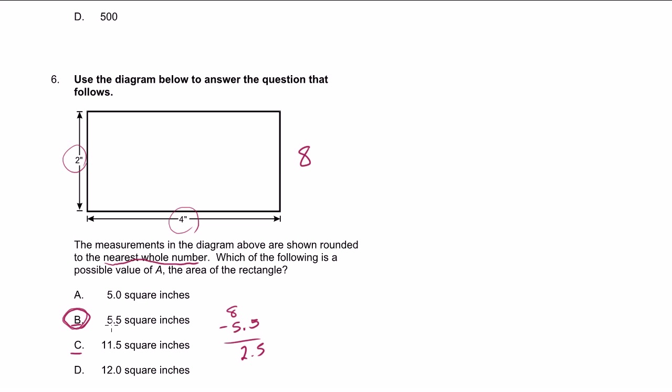But just to verify that this definitely could be an answer, if these are rounded to the nearest whole number, then this one could be as low as 1.5 inches, right? If this dimension is actually 1.5 inches, when they rounded it, they would have made it 2. It couldn't have been 1.49, because then they rounded it down.